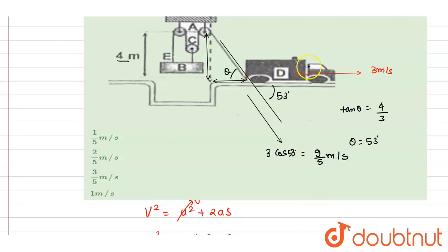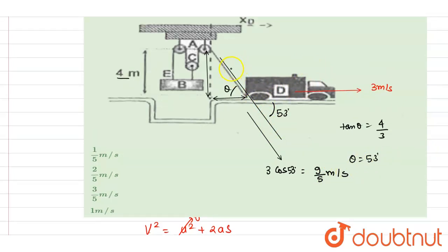So the velocity of this truck along the string is 9/5 at this instant. So the velocity with which this string length is increasing is this.